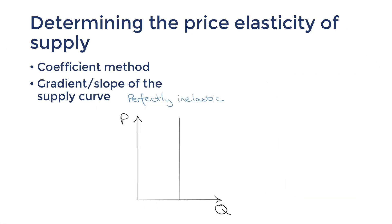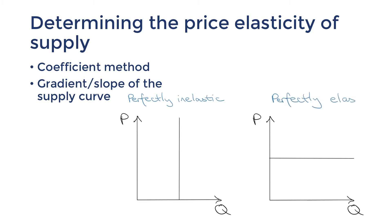The other extreme is when the supply curve is completely flat. This is perfectly price elastic supply and it means that producers are willing to produce a constant supply of the product given a certain price. It usually means that the producer is able to expand production quickly and infinitely. There isn't a realistic example for this because every good and service is subject to scarcity in some form.